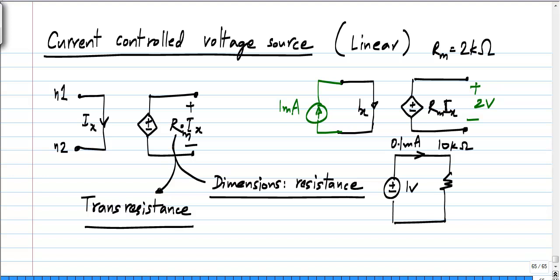Let us say I do this and break this here and connect it to a current controlled voltage source, the same one with Rm equals 2 kilo ohms. This is Ix and this is Rm Ix.